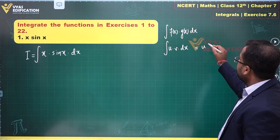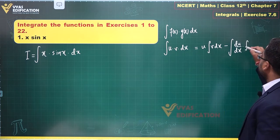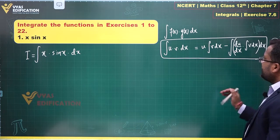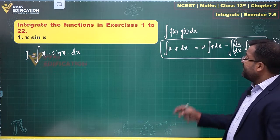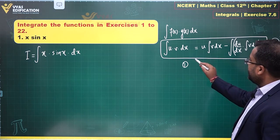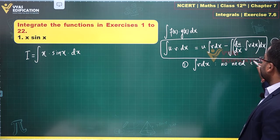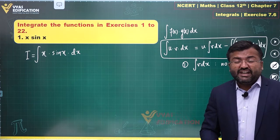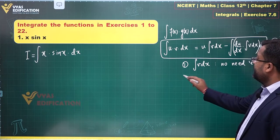The formula is: u times integral of v dx, minus the integral of (du/dx) times (integral of v dx). Two important things about this result: first, when writing the integral of v dx inside the formula, there is no need to use the constant of integration — it is redundant at that intermediate stage.